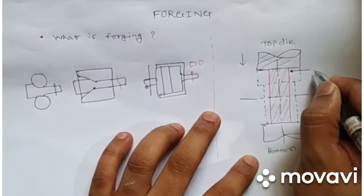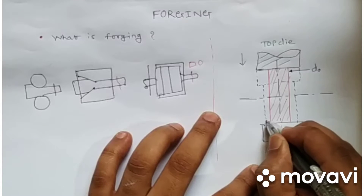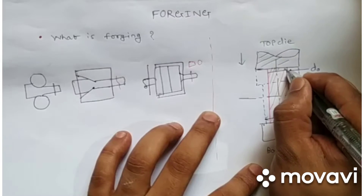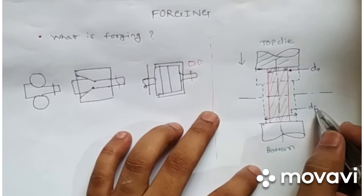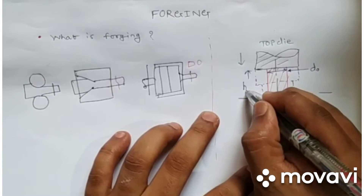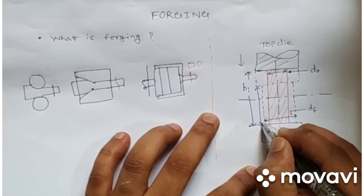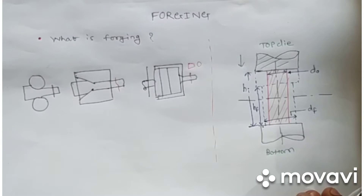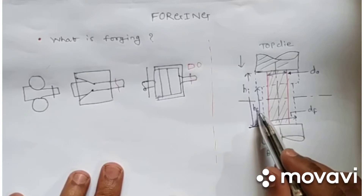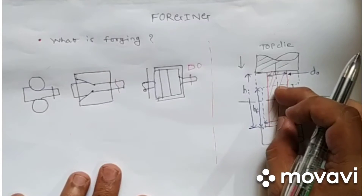Initially the material has an original diameter D₀. After forging, it bulges out to a final diameter D_f. The initial height is H_i, and after applying the compressive load the height reduces to the final height H_f. We get the final dimensions D_f and H_f. Since the cross-section is circular, we write D₀ and D_f.